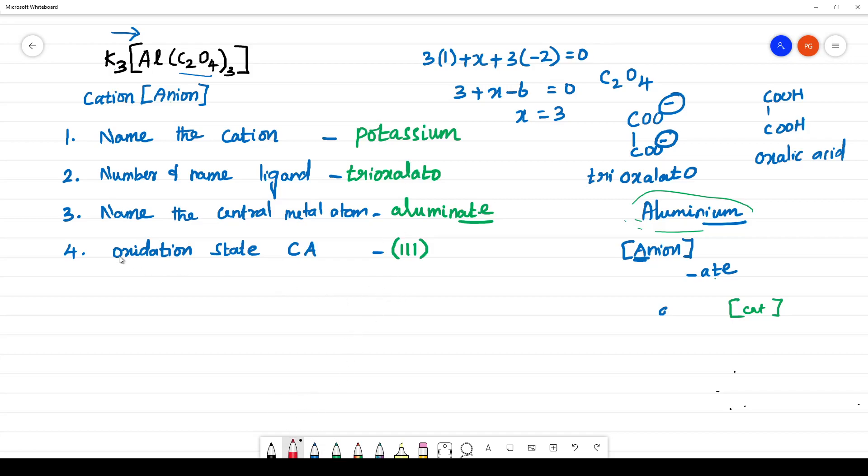Finally, what is the name of the complex? It is potassium trioxalato aluminate 3. You should not give gap while writing the name. Aluminate.